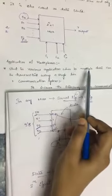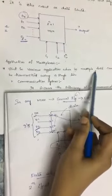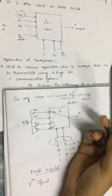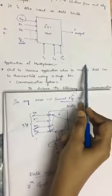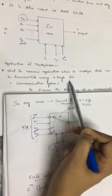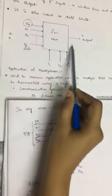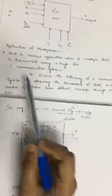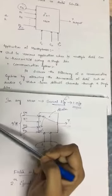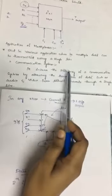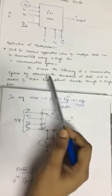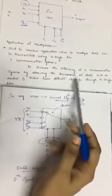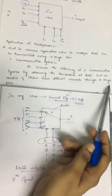Multiplexers can be used to transmit multiple data to a single destination or different destinations using a single line. You can combine all input signals and the final output is a single output, which can be transmitted to different or same destinations. One important application is in communication systems, where multiplexers increase efficiency by allowing transmission of data.